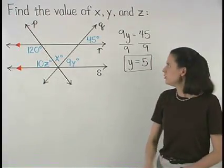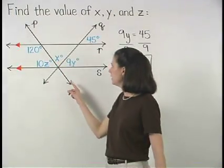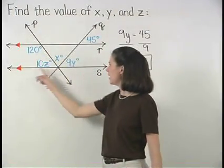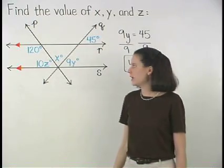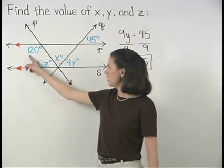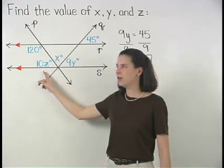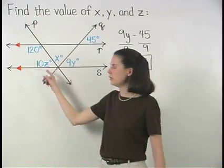Next, using the transversal p and the parallel lines r and s, we can see that the angles marked as 120 and 10z are same side interior angles.